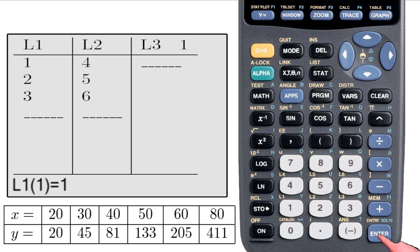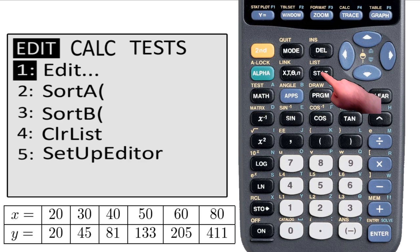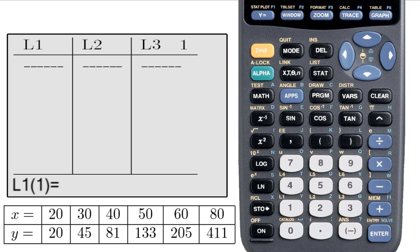As you can see, I already have some data in L1 and L2, but I'm going to need to erase it to put in the new data. You can erase lists individually by scrolling up to L1 and then hitting Clear, then Enter, or you can go back to the Stat menu and select Clear List to clear all of the lists. So now I enter the values in for L1 and L2, which correspond to x and y, respectively.